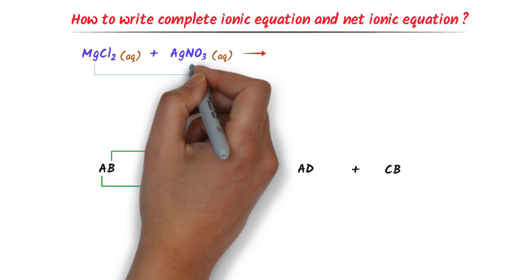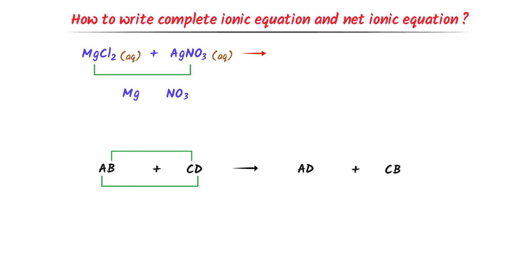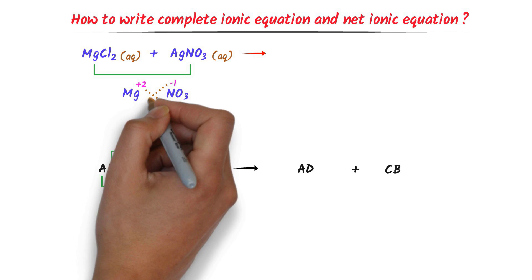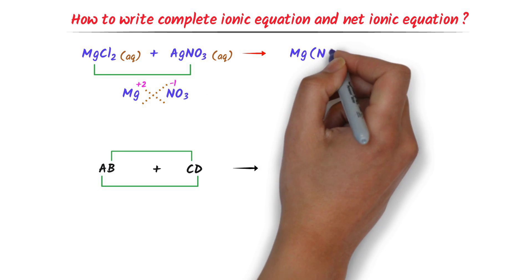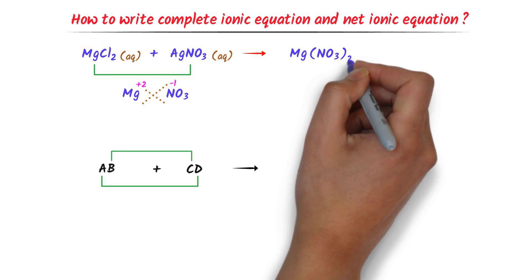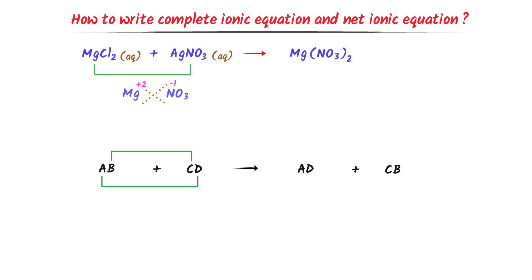Magnesium will combine with nitrate. The net charge on the magnesium ion is positive 2 and the net charge on the nitrate ion is negative 1. We cross the respective charges of each ion and get magnesium nitrate, Mg(NO₃)₂. So we have correctly predicted the first product of this reaction: magnesium nitrate.